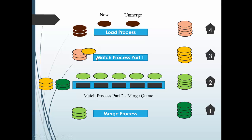Those records which have a consolidation indicator of 4 — when you just start the match process — have their consolidation indicator turn into 3. At the start of the match process, the consolidation indicator of such records turns into 3, regardless of whether it is a matched or unmatched record. It just turns into 3. When it is found as a match record, it is queued for the merge.